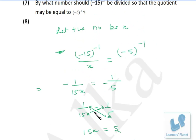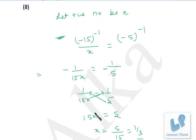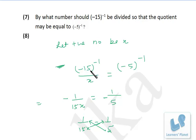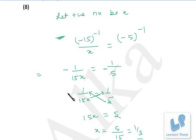So we have to find out the value of x, and that is 1 by 3. Quick recap: minus 15 raised to minus 1, when divided by x, gives minus 5 raised to minus 1. For minus 15 raised to minus 1, just write the reciprocal of minus 15, that's 1 by 15 — negatives remain. The reciprocal of minus 5 is 1 upon minus 5. Both negatives cancel. Just cross multiply and get the value of x.